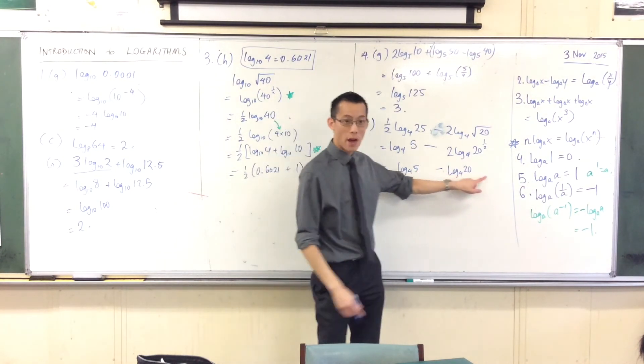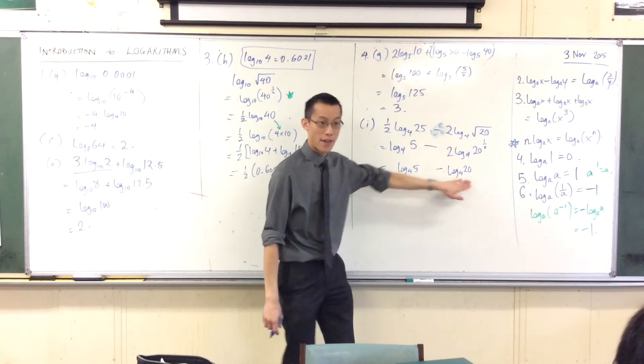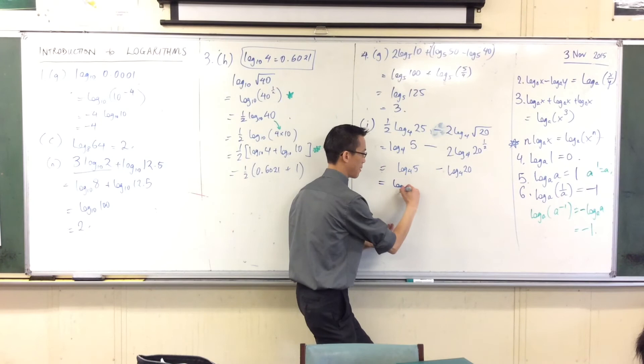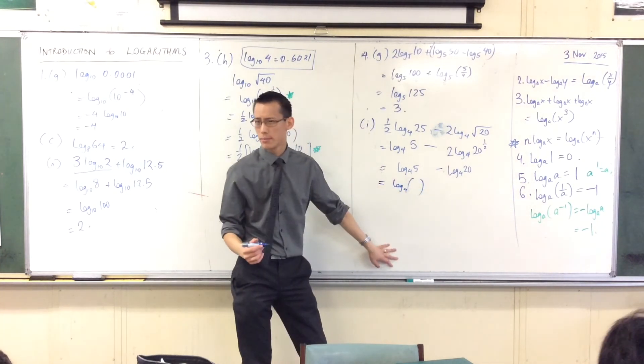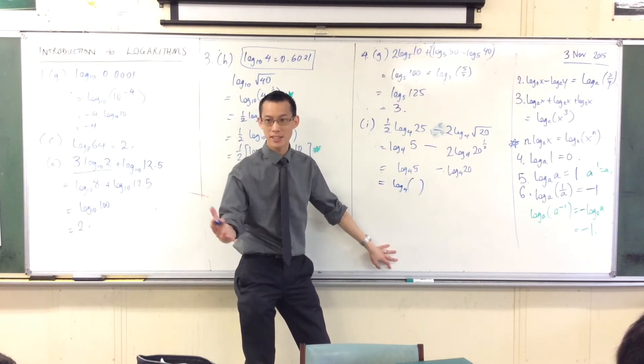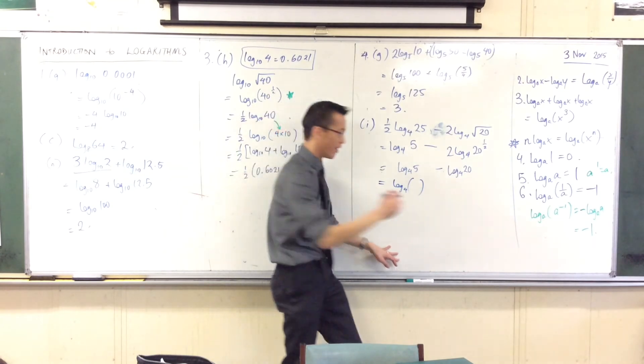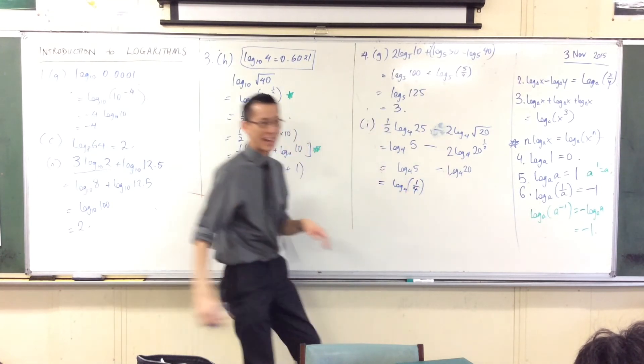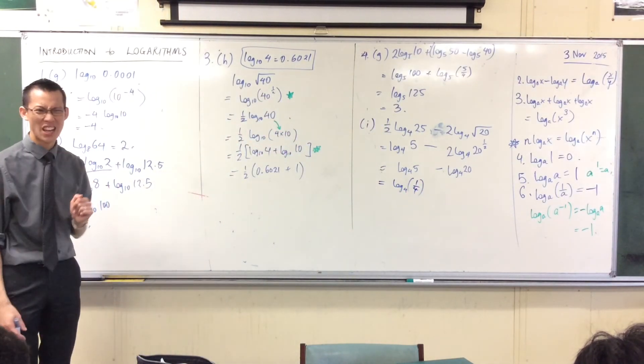And then, yes, because I'm going five take away twenty, it's five divided by twenty, right? So I'm going to go log base four of what? Five on twenty, which is a quarter.